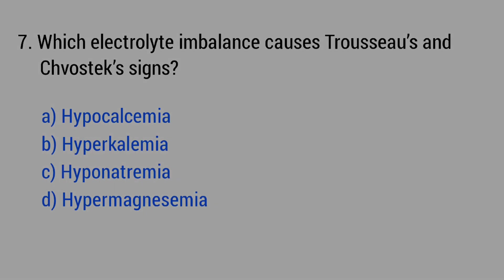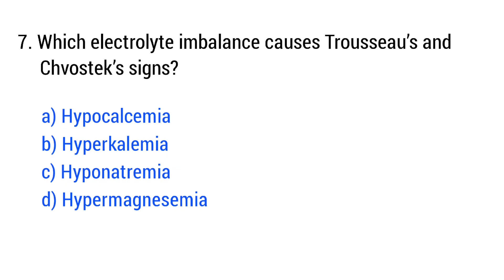Question No. 7. Which electrolyte imbalance causes Trousseau's and Chvostek's signs? The right answer is option A: Hypocalcemia.